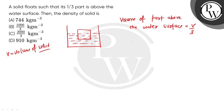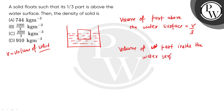And the volume of the part inside the water surface — that would be V minus V/3, which gives us 2V/3.